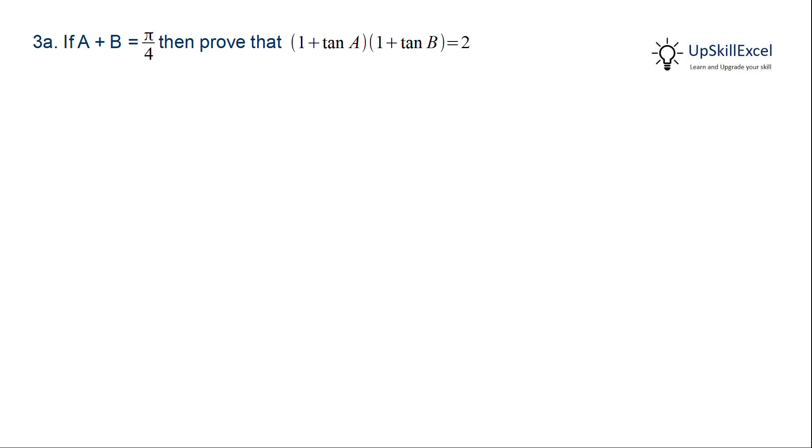We will start with the left hand side where we have product of (1 + tan A) and (1 + tan B). We will multiply both the terms and expand it where we get 1 + tan A + tan B + tan A tan B.